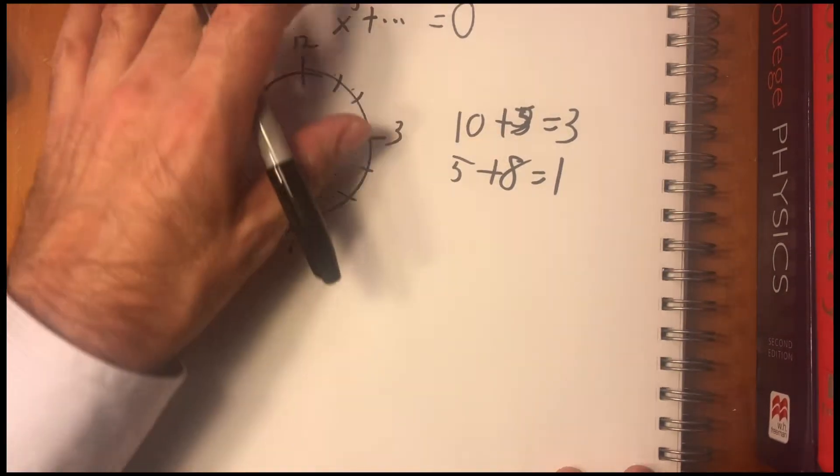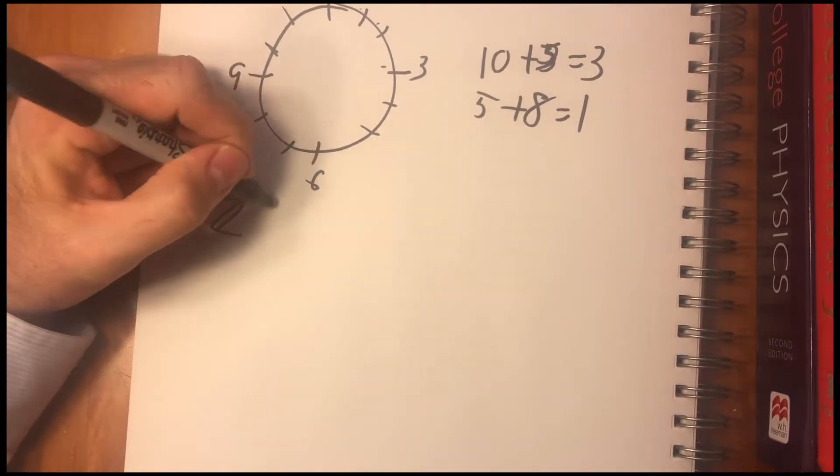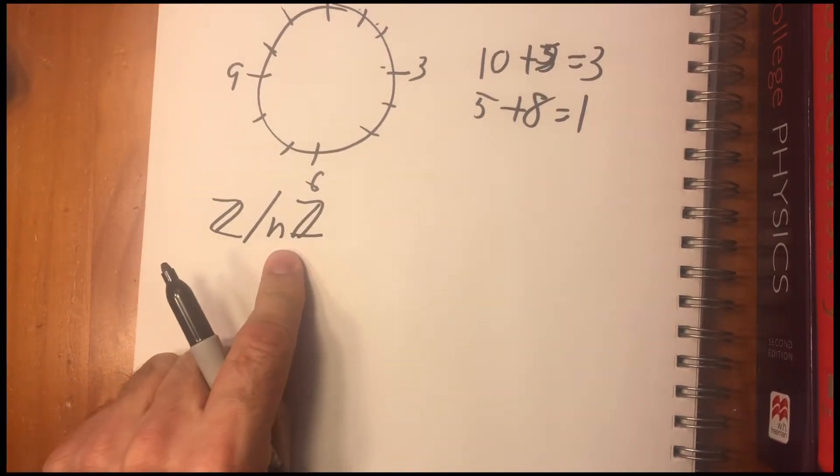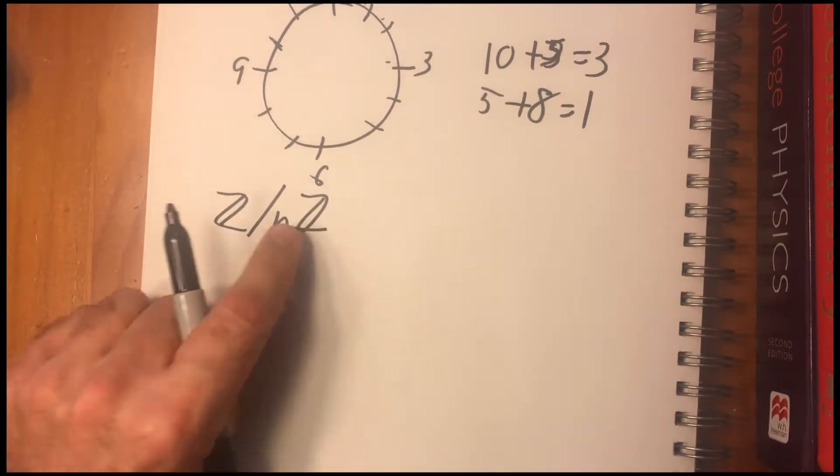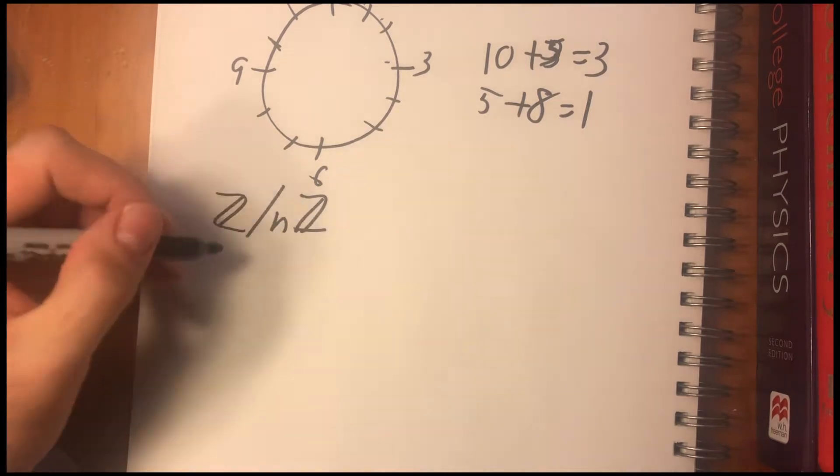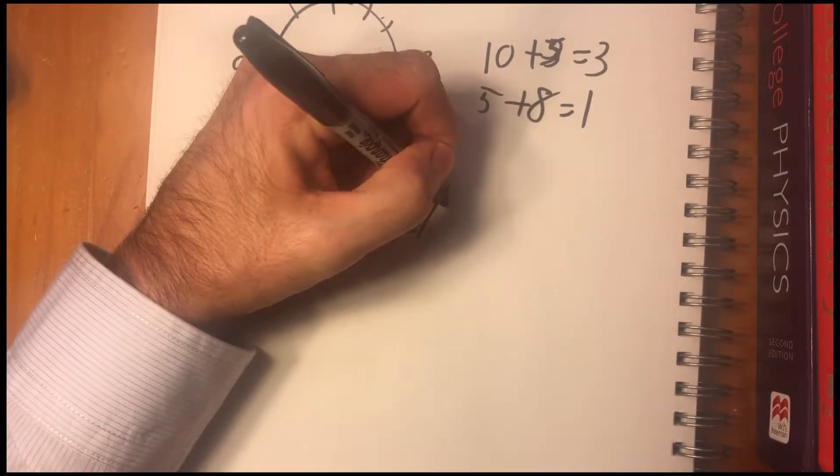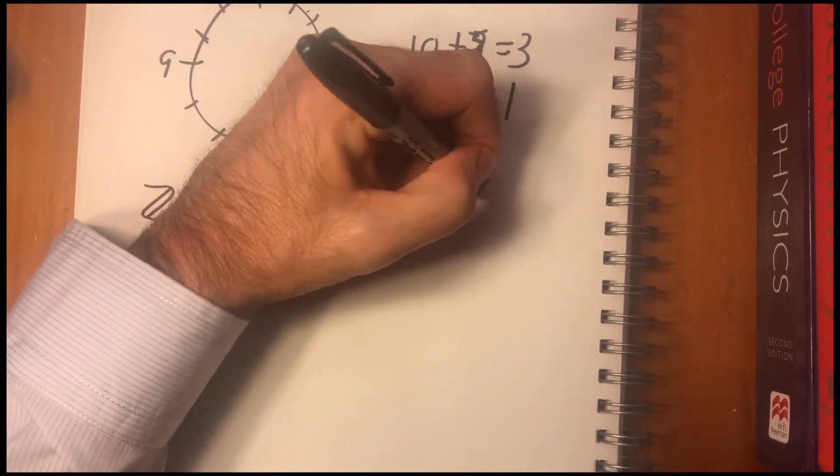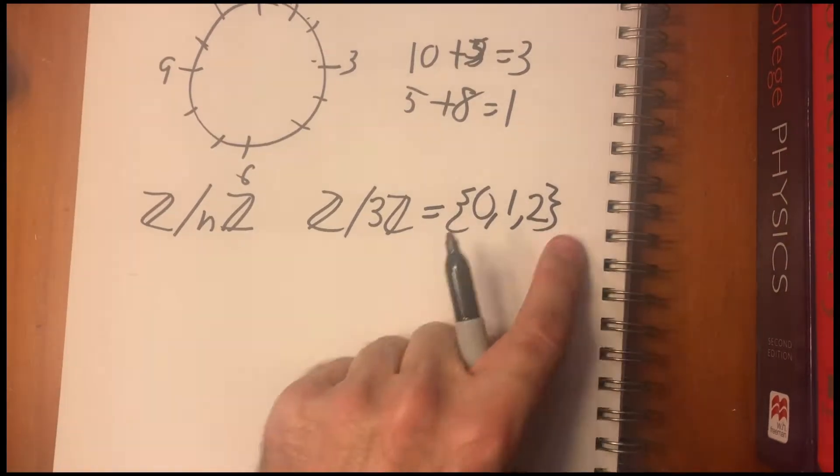It's a finite group. It's also cyclical, which we're not going to talk about much. But it's not just clocks. It's the integers modulo any number, any integer, that form one of these cyclic groups. The n is you just divide through with the integers. So for instance, Z mod 3 equals {0, 1, 2}. You're just dividing through by 3.